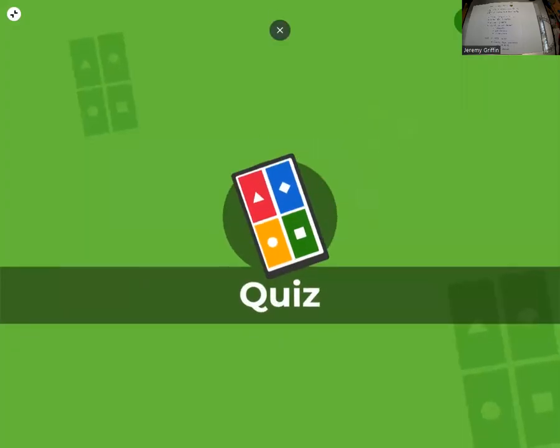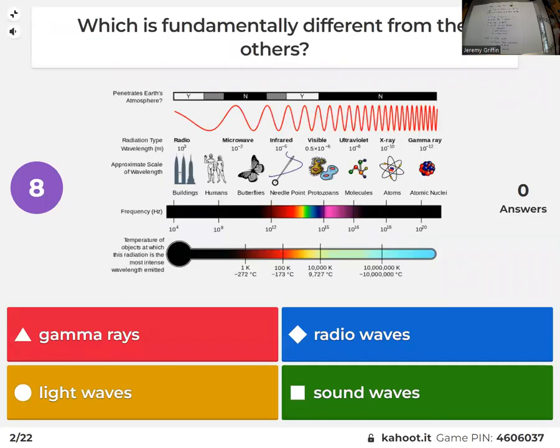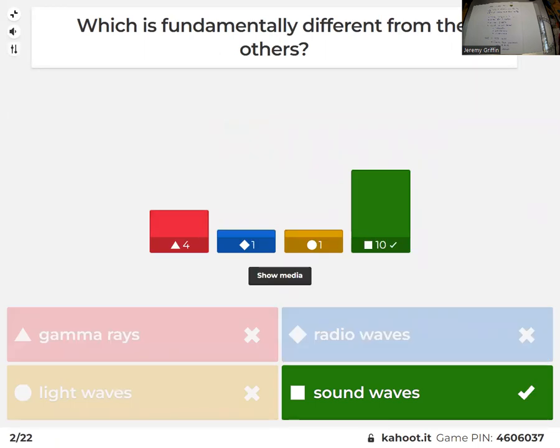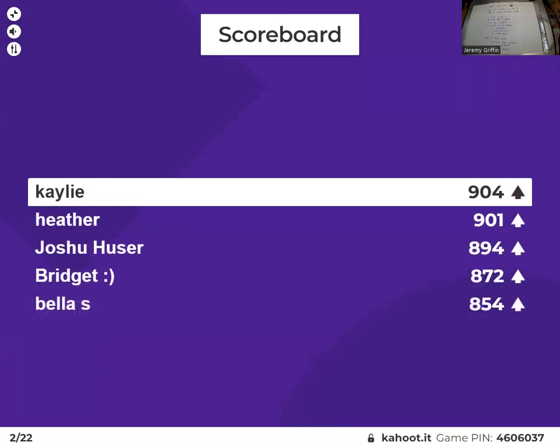Which is fundamentally different from the others? Yeah, you guys pay attention. Because the red, blue, and yellow ones are all just different parts of the electromagnetic spectrum. Sound waves, entirely different. We're talking about longitudinal wave, right, like a pressure wave. Any questions about that? All right, you guys are on.